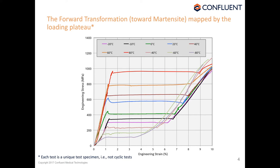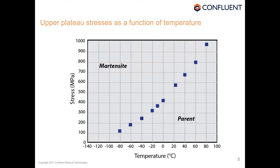We'll now establish the stress-temperature phase diagram for nickel-titanium, analogous to the water diagram. We start with the forward transformation — cooling towards martensite, towards lower entropy phases. Our first tool is stress-strain curves, using a unique sample for each curve, pulled at several temperatures. We look at the loading plateau — this is all loading, no unloading — and map it.